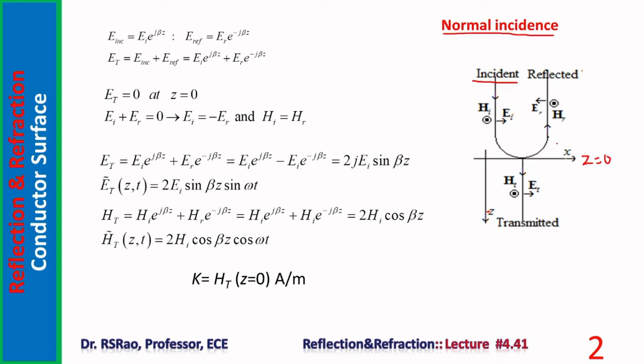We now determine the total electric field and total magnetic field in front of the reflecting surface. Regarding the refracted or transmitted wave: below z equals zero, the entire region is filled with perfect conductor. Inside a perfect conductor, the field cannot exist, so field is zero; without field, a wave cannot exist. Therefore, the refracted or transmitted wave is absent — we have only the incident wave and reflected wave.